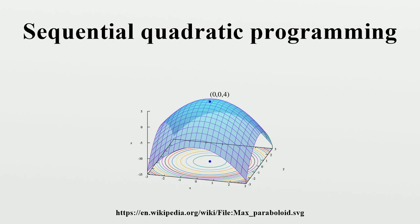SQP methods solve a sequence of optimization subproblems, each of which optimizes a quadratic model of the objective subject to a linearization of the constraints.